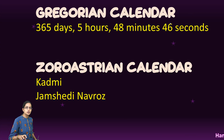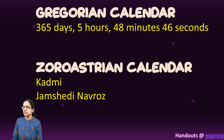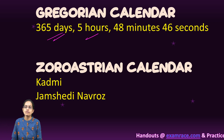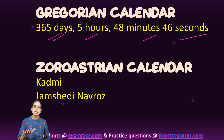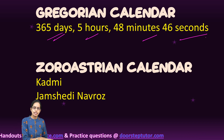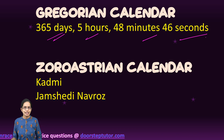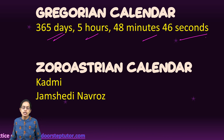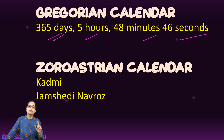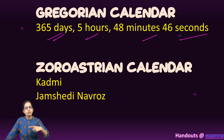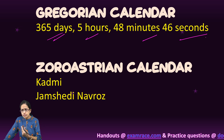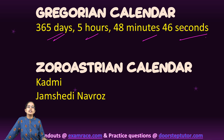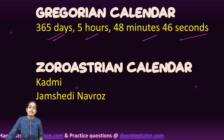The Gregorian calendar is a solar calendar with 365 days, 5 hours, 48 minutes, and 46 seconds. It is dated from the birth of Lord Christ and is considered one of the most scientific calendars. The Gregorian new year begins on 1st January.